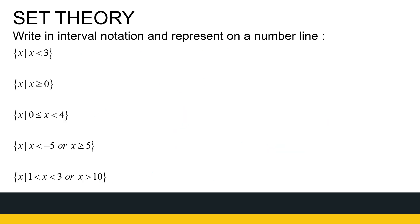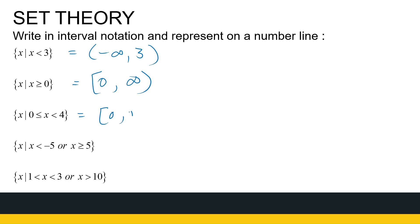Now we have set builder notation and want to write it as interval notation and draw it on a number line. All X less than 3 gives the interval (-∞, 3). X greater than or equal to 0 gives [0, ∞) — 0 is included. Infinity and minus infinity are never included because I can't put a stop to them. The interval from 0 to 4 with 0 included and 4 excluded is [0, 4).